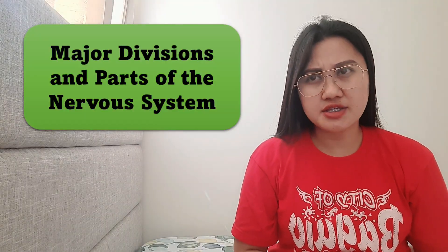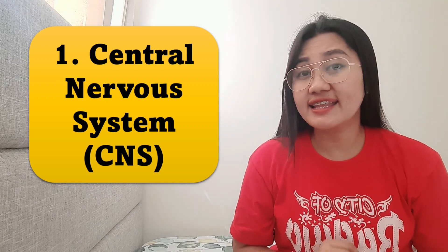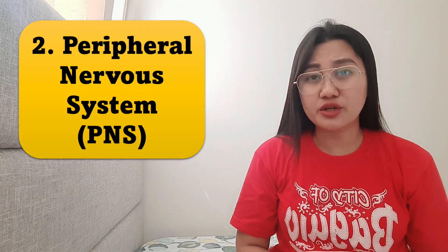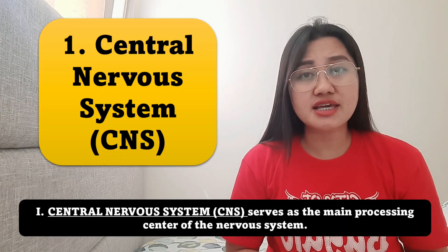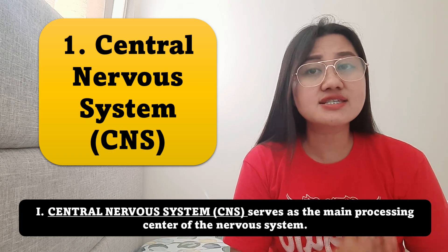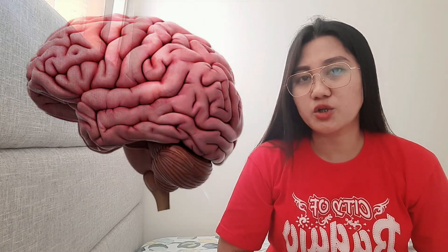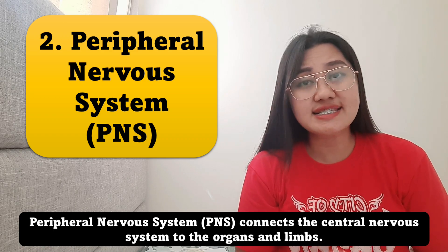There are two major divisions of the nervous system. The first is the central nervous system, or CNS, and the other is the peripheral nervous system, or PNS. The CNS serves as the main processing center of the nervous system, and it consists of two main components: the brain and the spinal cord. The PNS, on the other hand, connects the central nervous system to the organs and the limbs.